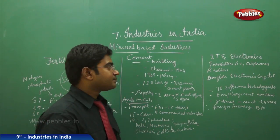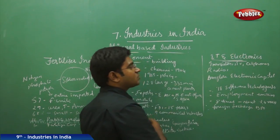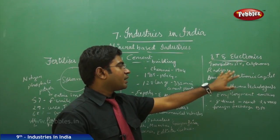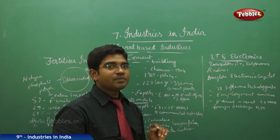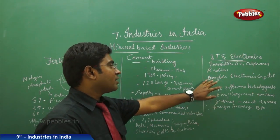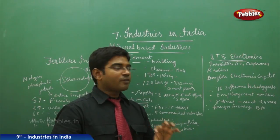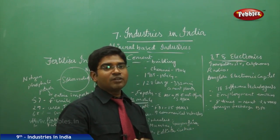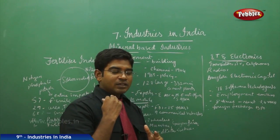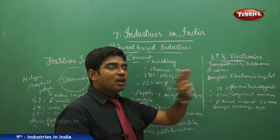Moving on to the IT and electronics industry, they contribute a lot and fall under the category of producing transistors, TVs, cell phones, radios, and radar units. With the growth of various industries at Bangalore — the Silicon Valley of India — Bangalore has become the electronic capital of India. It has 18 software technology parks that provide software output and solutions for the nation and beyond.